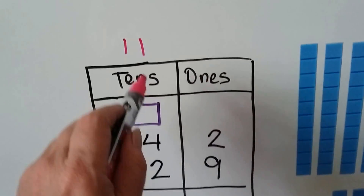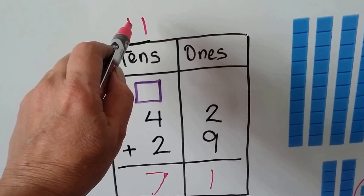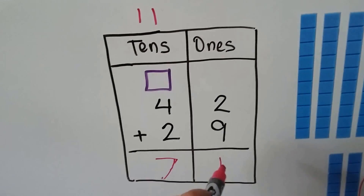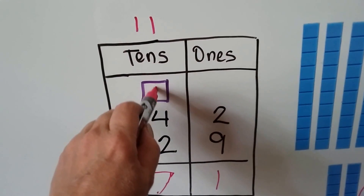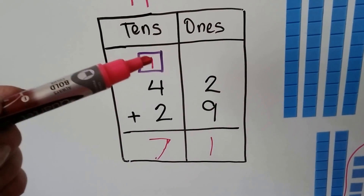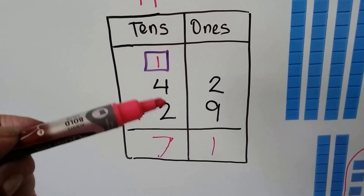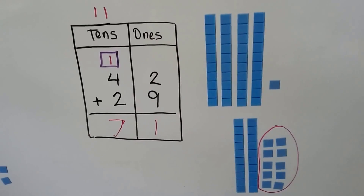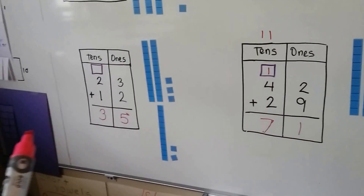Nine, ten, eleven — eleven has one ten and one one. This is the ones place and this is the tens place. The one that was in the ones place goes here, and this one for the tens place goes into the tens column. We have one plus four — that's five, six, seven — seventy-one! It worked. So you can make your own models.